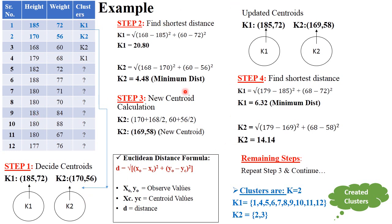Let's look at an example. This is the given dataset with serial number, height, and weight — there are 12 entries total. The first step is to decide the centroid. Consider serial number one and two as the centroid points of the two clusters: K1 and K2. The centroid of K1 is (185, 72) — that is height, weight — and the centroid of K2 is (170, 56). So first decide the clusters: K equals two, meaning two clusters. Second, decide the centroids: K1 centroid is serial number one, and K2 centroid is serial number two. The problem statement is to identify which cluster — K1 or K2 — each of the remaining entries from serial number 3 to 12 belongs to.